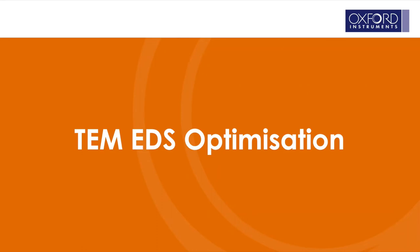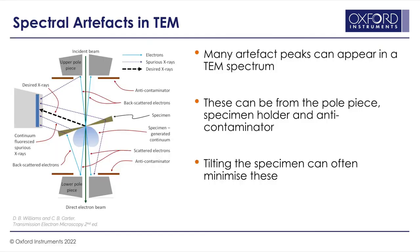How can we optimize our TEM analysis? One thing to be aware of is just how complex the interaction between the electron beam and your TEM sample is — we're in a really confined space. One big challenge for TEM is minimizing spectral artifacts. With all of these components in close proximity, like the anti-contaminator, the pole piece, the specimen holder itself, we can often get x-rays that we're not wanting. Being aware of these x-rays and looking at ways to minimize these artifacts is important, and often the easiest way is just tilting the sample holder.